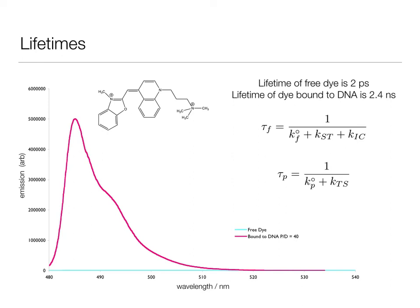So when the dye is in free solution, we have rotation, I have an efficient method of internal conversion, and the rate constant for internal conversion is very high. When this is bound to DNA, I stop rotation around this bond, and so the rate constant for internal conversion drops considerably.